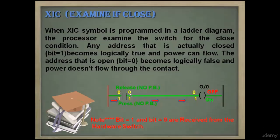If XIC symbol is programmed in a ladder diagram, the processor examines the switch for the close condition. Any address that is actually closed (bit=1) becomes logically true and power can flow. The address that is open (bit=0) becomes logically false and power doesn't flow through the contact.